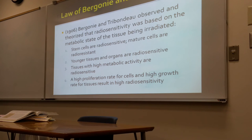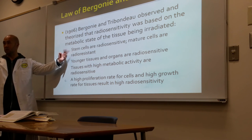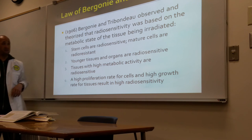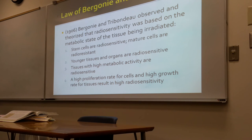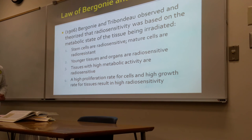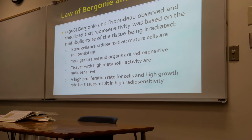Bergonié and Tribondeau observed and theorized that radiosensitivity was based on the metabolic state of the tissue being irradiated. Stem cells — young, immature precursor cells — are radiosensitive, whereas mature cells are radio-resistant. At a tissue level, younger tissue and organs are also radiosensitive. Tissues with high metabolic activity are also radiosensitive — if they are rapidly dividing, they are more radiosensitive.